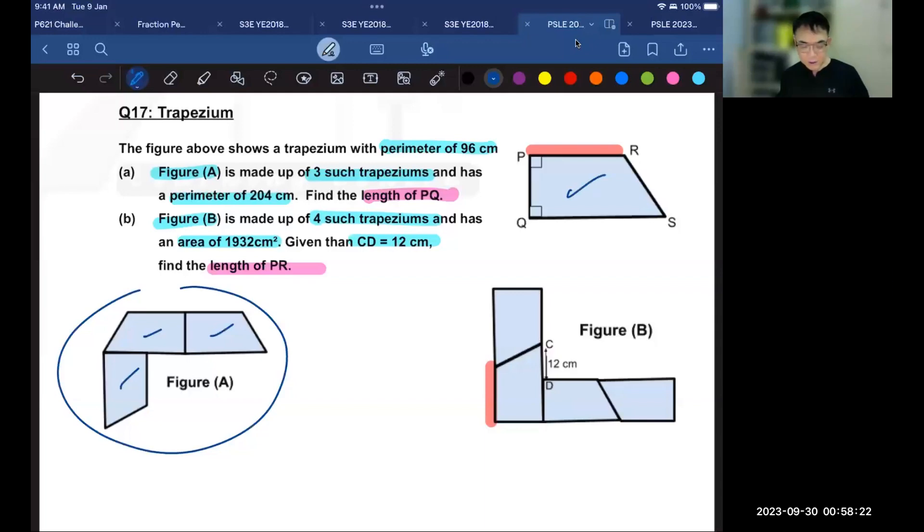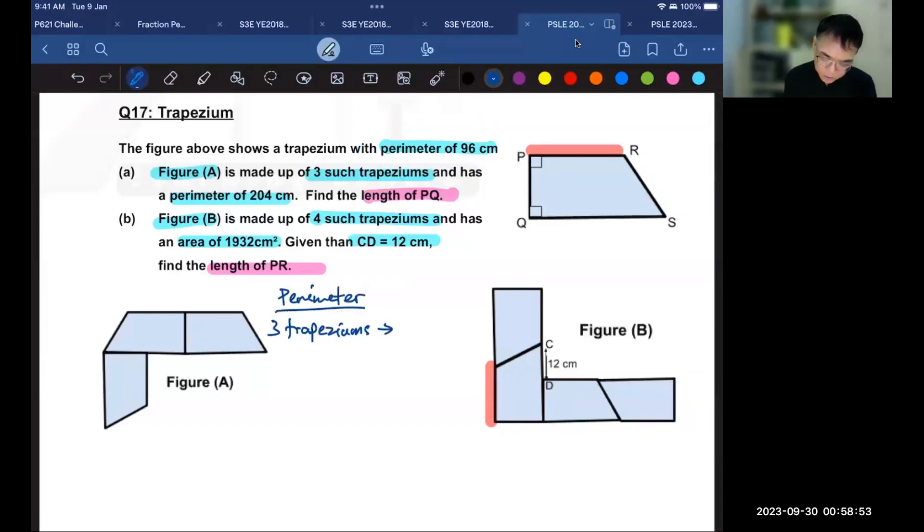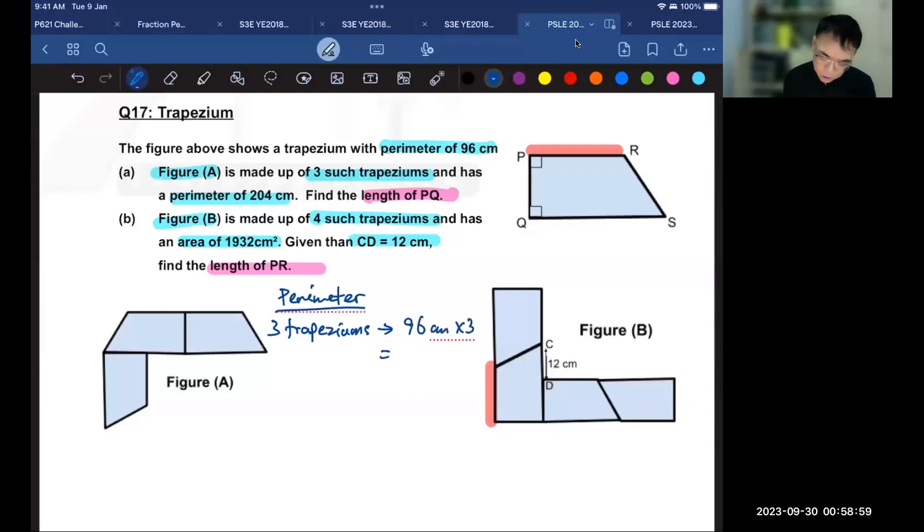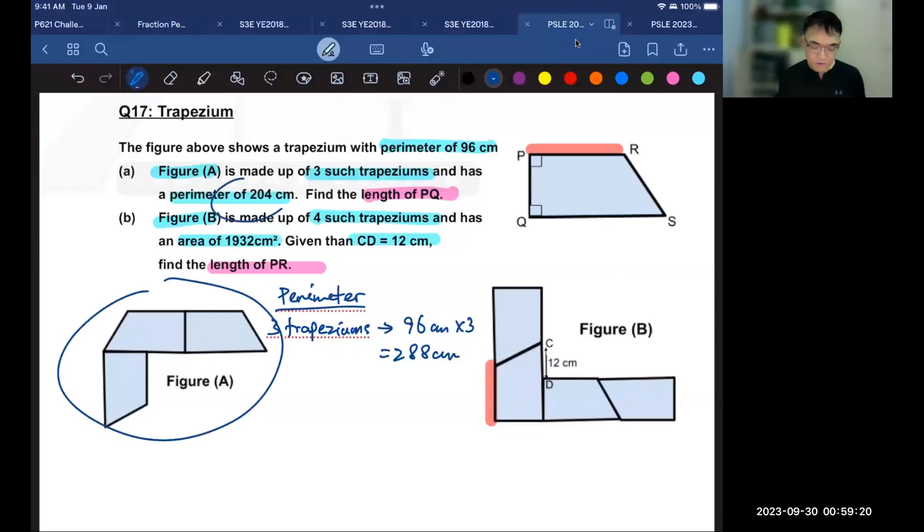Since this figure is made up of three trapeziums that are like the one here, we should start by finding the perimeter of three trapeziums. Since the perimeter of one trapezium is 96 centimeters, then the perimeter of three trapeziums would be 96 centimeters times 3. This would give us 288 centimeters. It is made up of all the lines that you see here in figure A. But it is also given that figure A has a perimeter of 204. So why is it different from the 288 that we found?